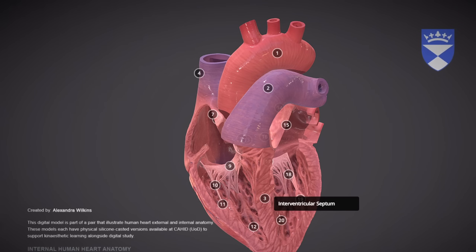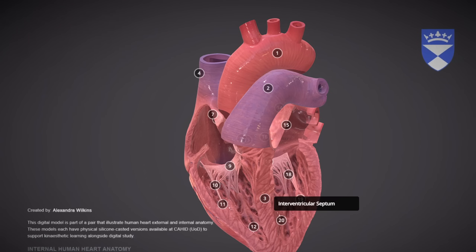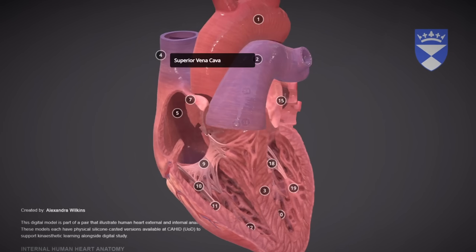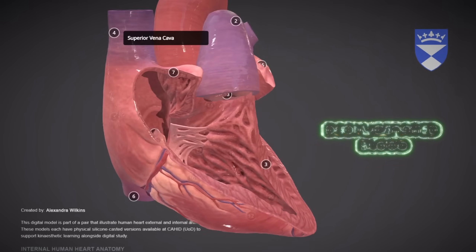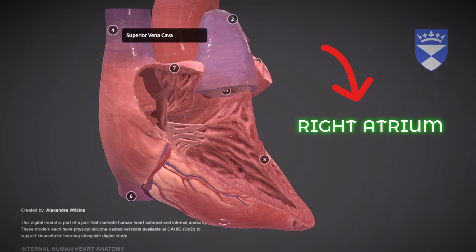3. Interventricular Septum: A thick, muscular wall that separates the right and left ventricles, preventing the mixing of oxygenated and deoxygenated blood. 4. Superior Vena Cava: This large vein brings deoxygenated blood from the upper body, head, neck, and arms back to the right atrium.